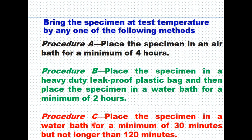Bring the specimen to test temperature by one of the following methods. After preparing the Marshall specimens, bring them to 25 degrees centigrade using one of three procedures. Procedure A: place the specimen in an air bath for a minimum of 4 hours at 25 degrees centigrade. Procedure B: place the specimen in a heavy-duty leak-proof plastic bag and then place it in a water bath for about 2 hours. Procedure C: place the specimen in a water bath for a minimum of 30 minutes but not longer than 120 minutes.